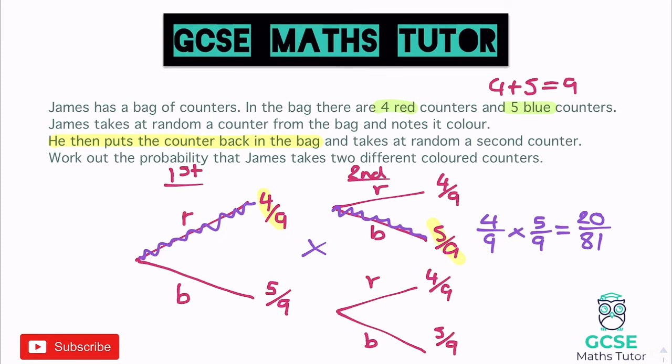The probability of getting a red then a blue is 20/81. You don't need to simplify fractions in probability — 20/81 tells us something important: there are 20 different ways of this happening out of a possible 81. If we labeled the red counters 1 to 4 and the blue ones 1 to 5, there are 20 different ways of taking a red then a blue.